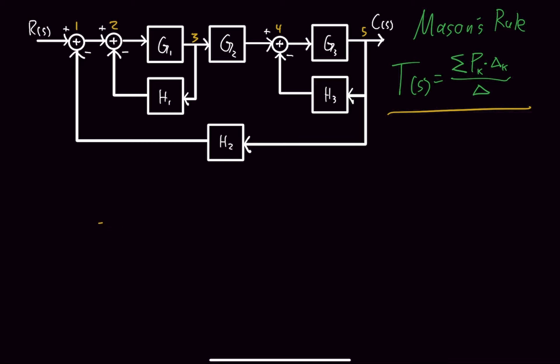We're going to make a line. So I've got R(s), we've got a point, our second point, our third point, fourth, fifth, and our output C(s).